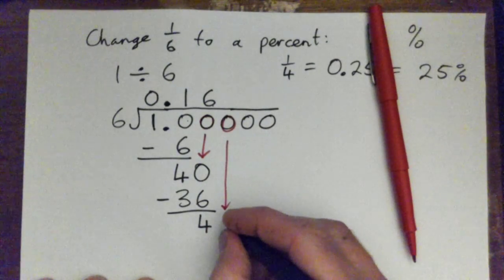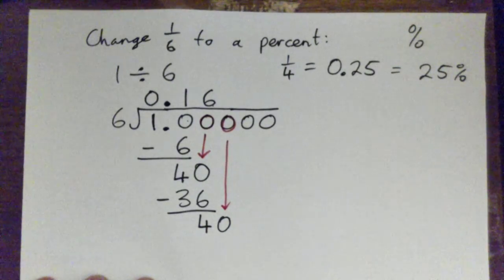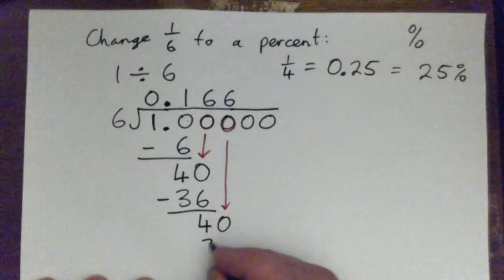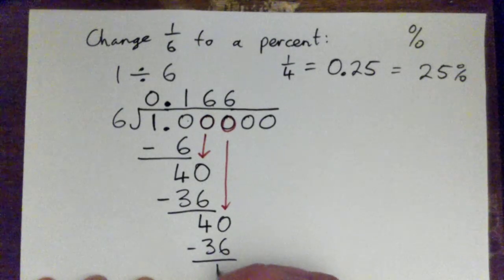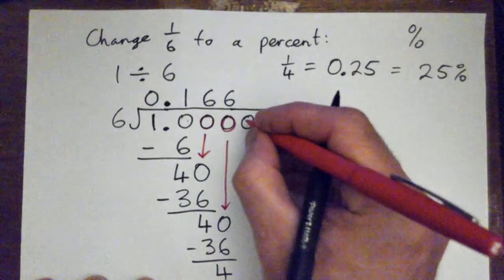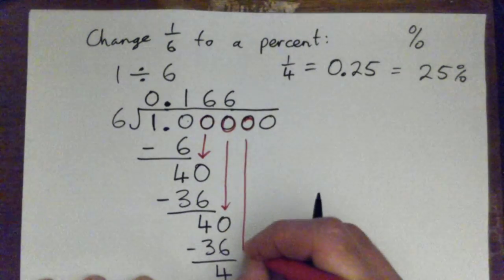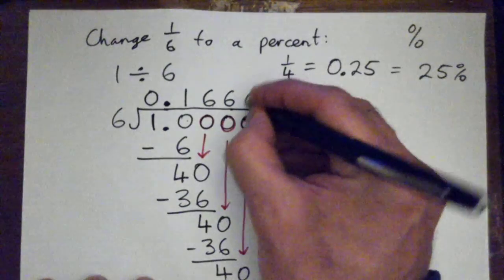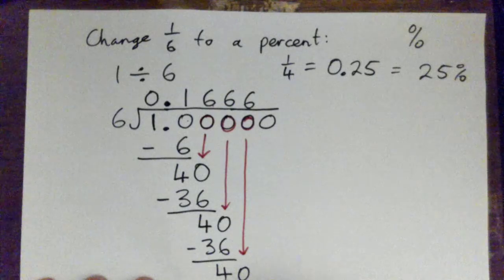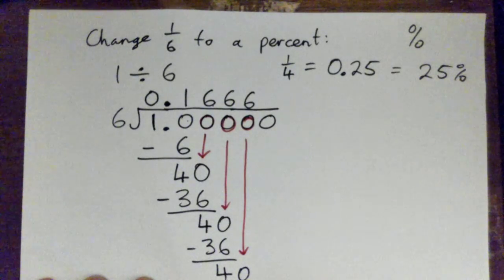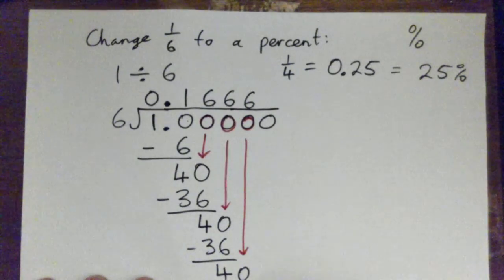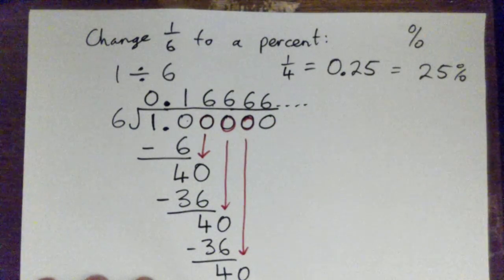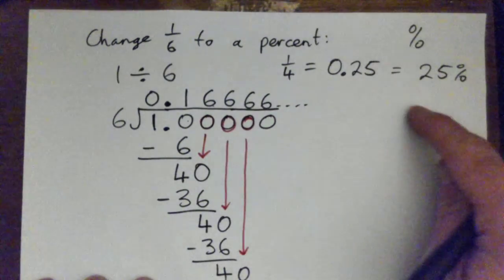Six into 40 — six is a good guess. Six times six is 36. When I subtract, 40 minus 36 is four. That's less than six. Bring one of these zeros down, and go six into 40 again — that gives another six. Six times six is 36. Subtract to get four. Bring down another zero. Are we starting to see what's going to happen? It'll just keep going on — all sixes. Oh my goodness. We just keep making more sixes.